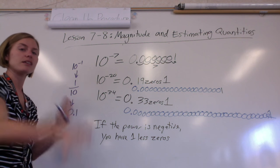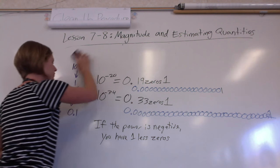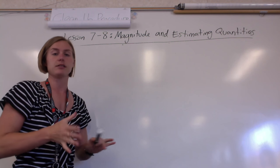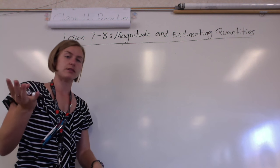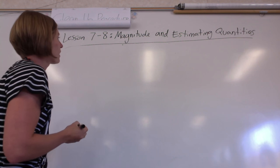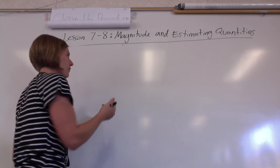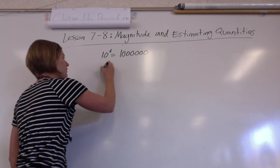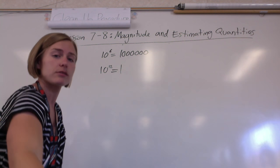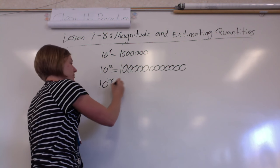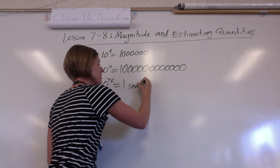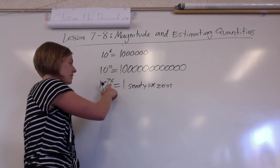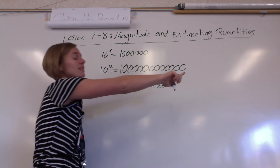Now let's take a look at what's going on with the positive powers. With the positive powers, hopefully you notice that the exponent is exactly how many zeros you have. So with the negative it's one less, but with the positives it's exactly how many zeros you need. If we had 10 to the 6th power, that means I'm going to have a one and then six zeros. 10 to the 12th means a one and then twelve zeros. 10 to the positive 76th power means you have a one followed by seventy-six zeros.